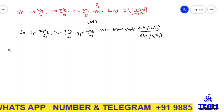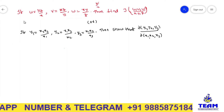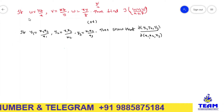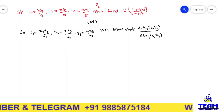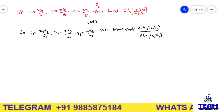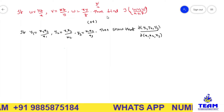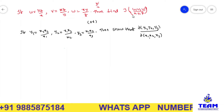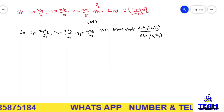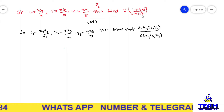In this video, we are solving a problem on Jacobian. The given problem is: if u is equal to yz by x, v is equal to xz by y, w is equal to xy by z, then find the Jacobian of u, v, w with respect to x, y, z.